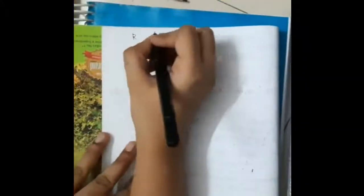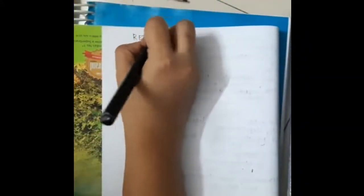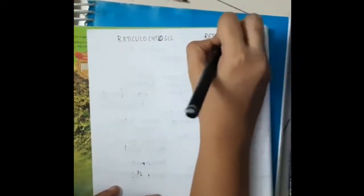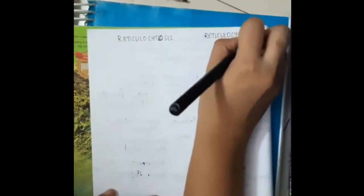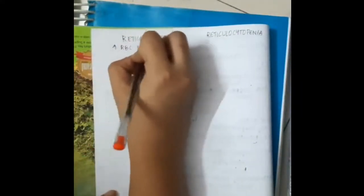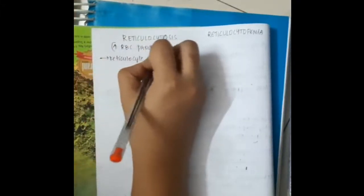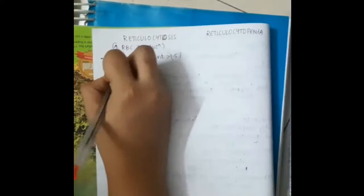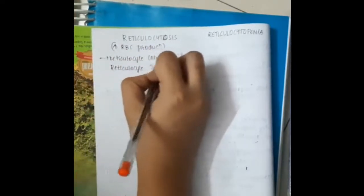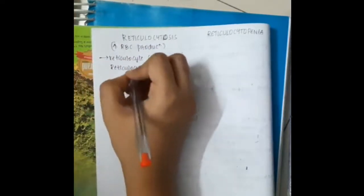Let us now learn the differences between reticulocytosis and reticulocytopenia. In reticulocytosis, there is increased RBC production. Here the reticulocyte count is more than 1.5 percent and reticulocyte index is more than 3 percent.